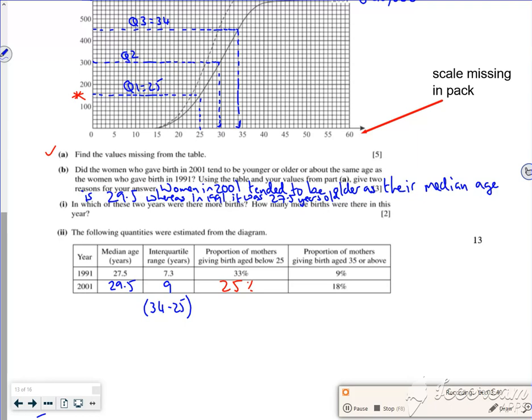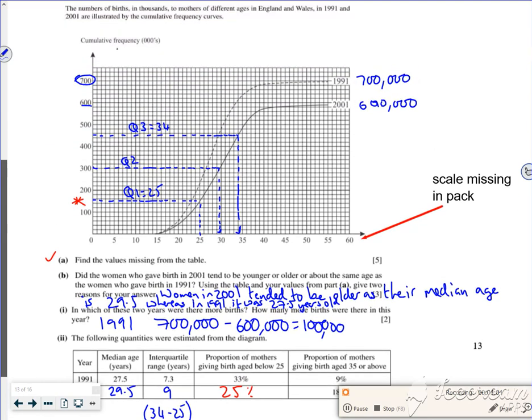So it says, in which of these two years were there more births? So 1991 is my answer and I took it as 700,000 minus 600,000 to give me 100,000 births. In my mind though, I actually think it's 700,000 and 590,000.